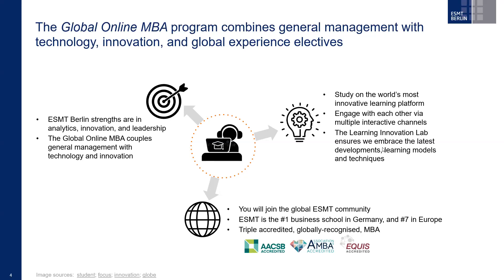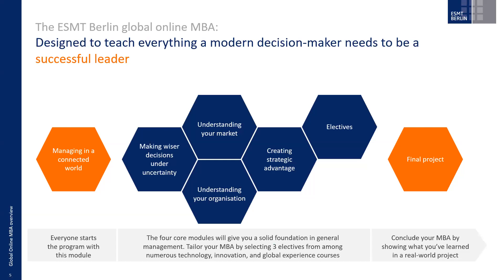What will you actually be studying? The structure of the program is quite unique and something we're really proud of. Everybody will start with the first module, which is Managing the Connected World. This is a slightly shorter, slightly lighter module — because you're working, there's a minimum of three years of work experience required to apply, and you may not have studied for a while. This module eases you in gently and starts you learning good behaviors, looking at how you work in a global virtual team and giving an introduction to general management.